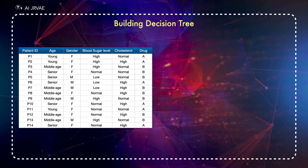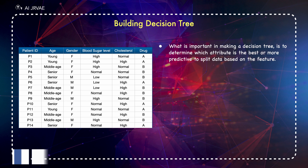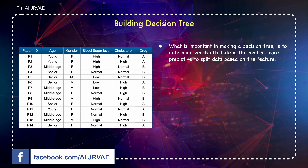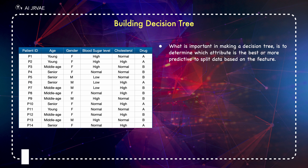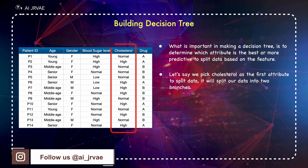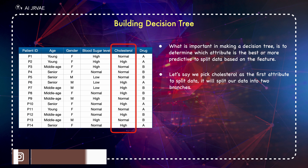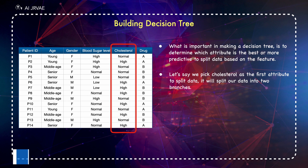Decision trees are built using recursive partitioning to classify the data. Let's say we have 14 patients in our dataset. The algorithm chooses the most predictive feature to split the data on. What is important in making a decision tree is to determine which attribute is the best or most predictive to split data based on the feature. Let's say we pick cholesterol as the first attribute to split data — it will split our data into two branches.